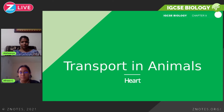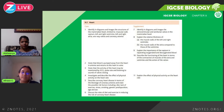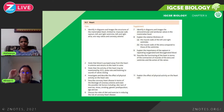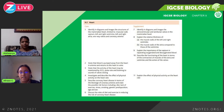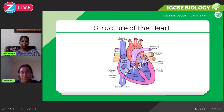Now we come to the second part of this chapter — the heart. The syllabus wants you to be able to identify the different parts of the heart, state their various functions, know the different diseases affecting the heart, how to keep your heart healthy, and know the difference between oxygenated and deoxygenated blood. We start with the structure of the heart.